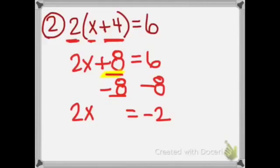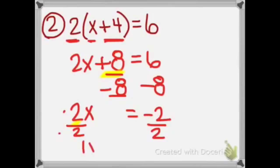The fourth step says multiply or divide the number with the variable. That number is 2. Since it says 2 times x, we're going to do the opposite, which is divide by 2. 2 divided by 2 is 1x, equals negative 2 divided by 2, is negative 1. So x equals negative 1.